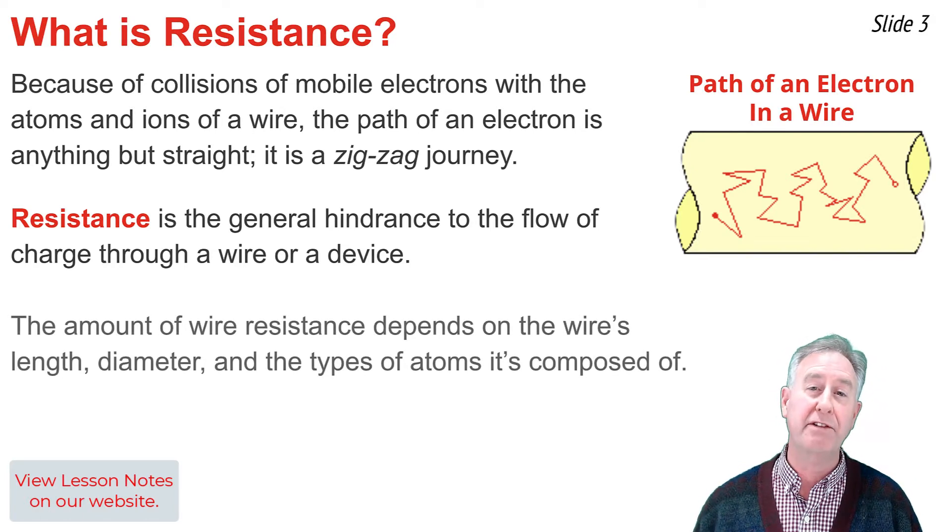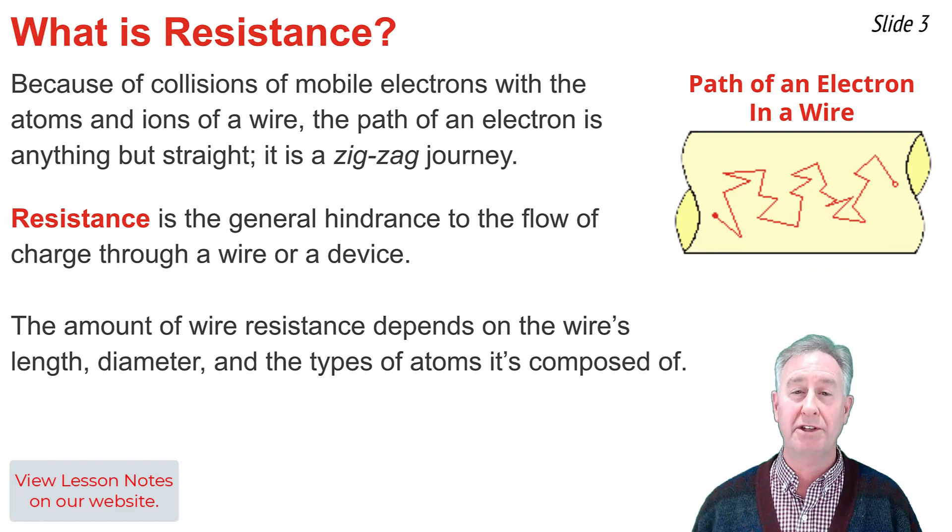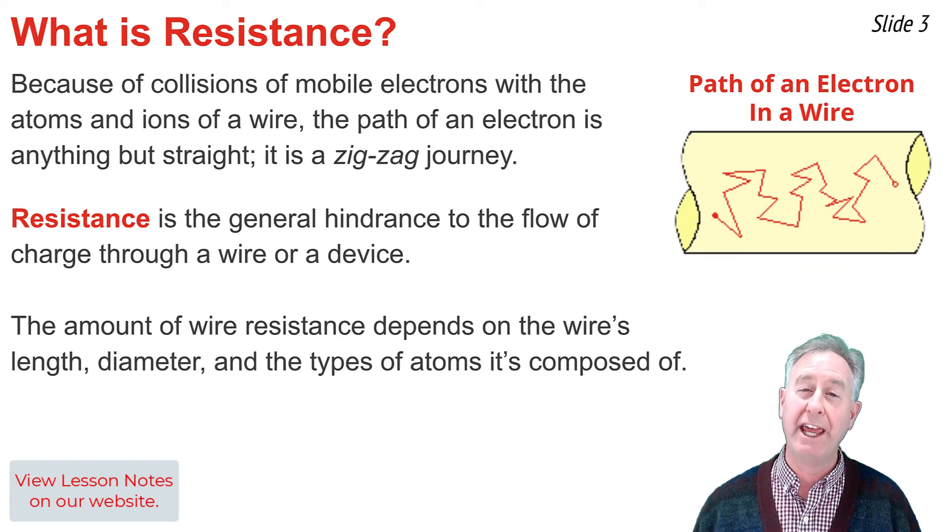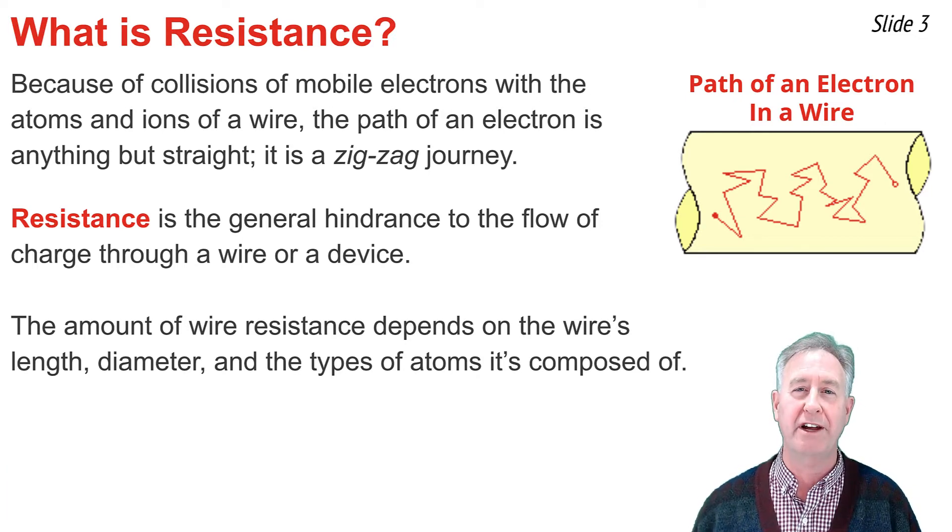There are three factors that affect the amount of resistance experienced by a wire. One of them is the length of the wire. The second is the cross-sectional area or diameter of the wire. And the third is the types of atoms that that wire is composed of.